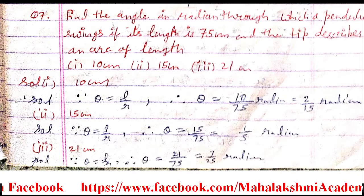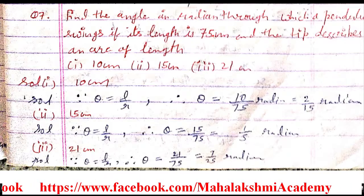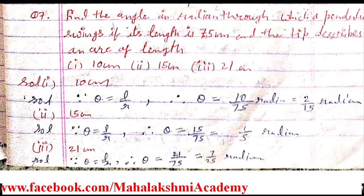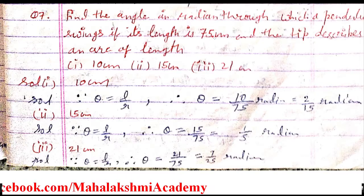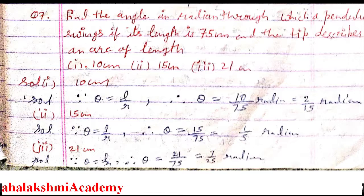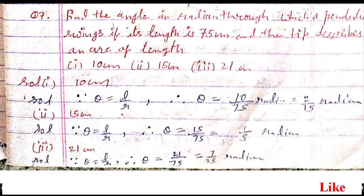Students, here the length is 75 centimeters. Since the pendulum's length is 75 centimeters, it will behave as radius. And these arcs behave as L. You know, length of arc we should represent by L. So pendulum's length is going to be the radius, and the θ formula is L/R.